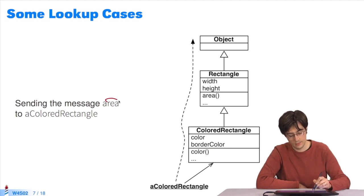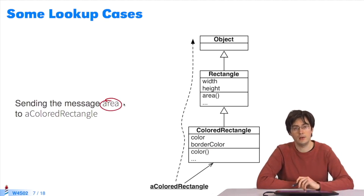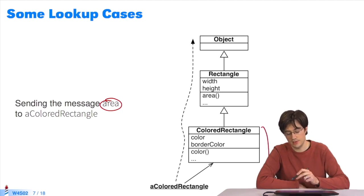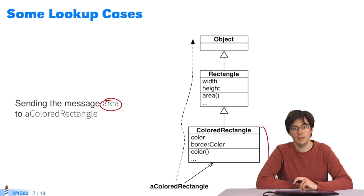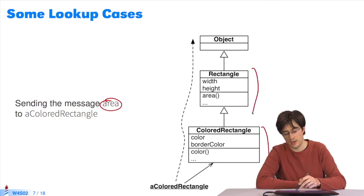If we now send the message area to acolored rectangle, the algorithm searches the receiver's class for the method area. Not finding it, it searches the superclass. It finds it and returns the method.